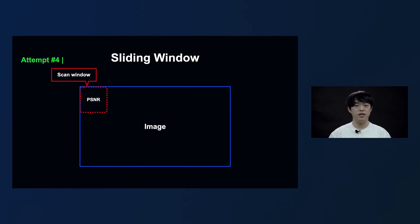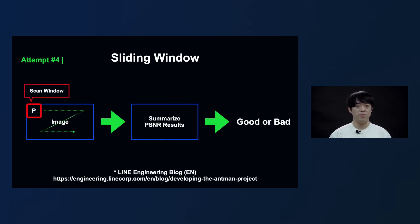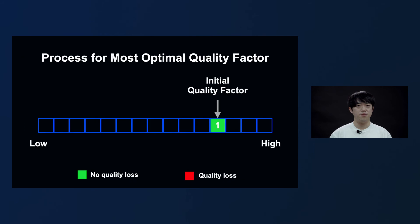So the fourth attempt was to check all areas in an image more closely. The box outlined in red represents the area calculated by the PSNR, and we call that box a window. The window moves by one pixel until it scans the entire image. The result from the image scanned by the window is summarized to determine the occurrence of noise. We use the sliding window method to find any localized noise in an image. You can read about how we improved the algorithm to reduce the amount of calculations on the LINE engineering blog.